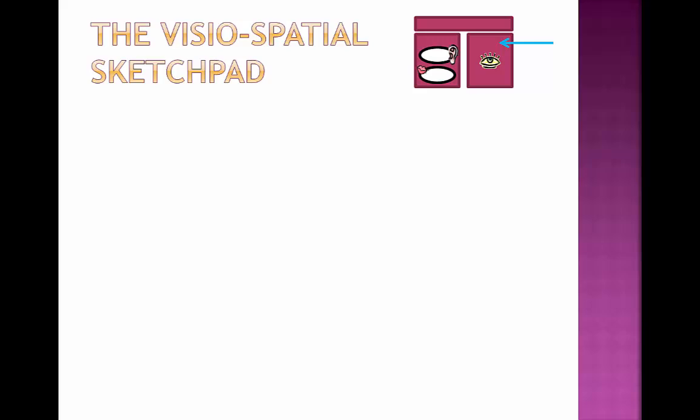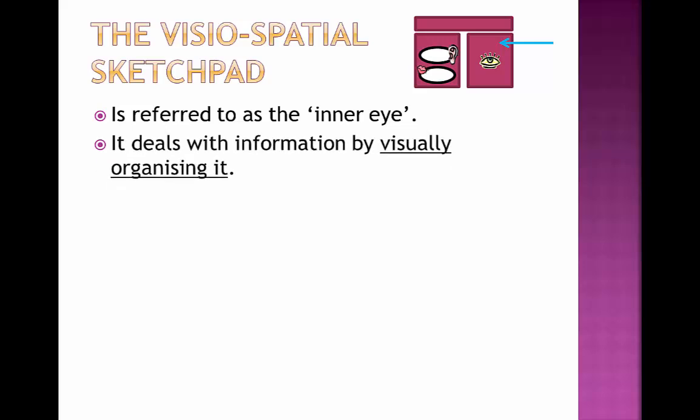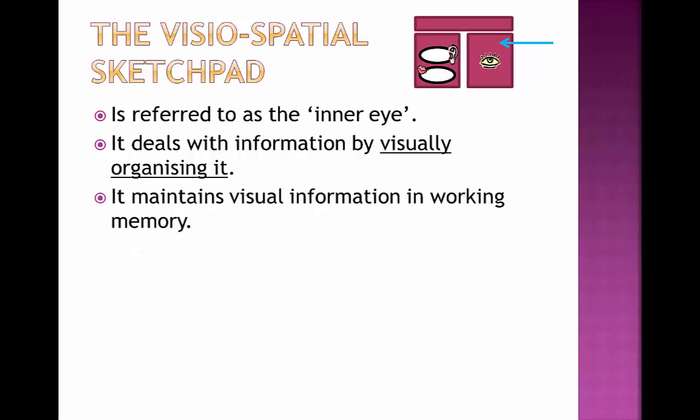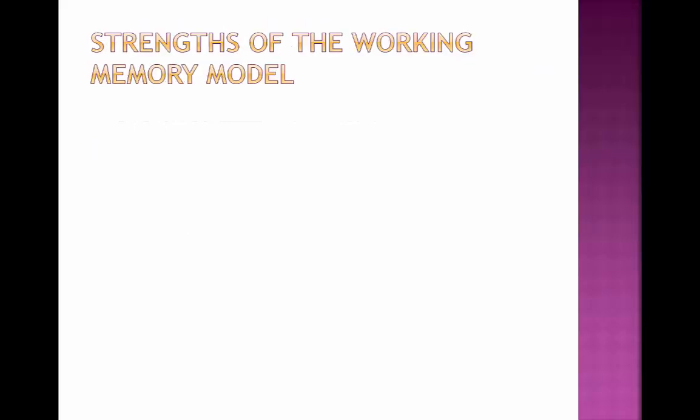Next is the visuospatial sketchpad, the final component, referred to as the inner eye. It deals with information by visually organising it, maintaining visual information in working memory. When you close your eyes and try to work something out — a maths problem or a design — you imagine a mental rough sheet and draw your ideas upon it. This is what the visuospatial sketchpad does: it allows your brain to organise things using spatial awareness inside your own head, which is why it's called the inner eye.